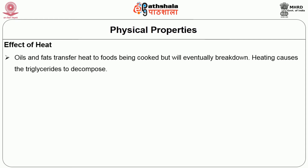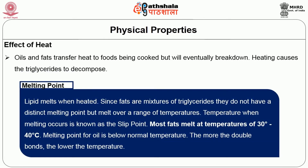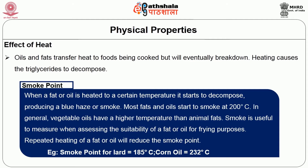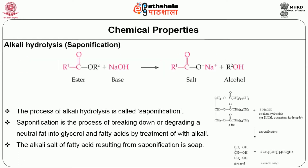Oils and fats transfer heat to foods being cooked but will eventually break down; heating causes triglycerides to decompose. Most fats melt at temperatures of 30 to 40 degrees C, and the melting point of oil is below normal temperature — the more double bonds, the lower the temperature required to melt the oil. The smoke point is the temperature at which a fat or oil starts to totally decompose, producing a blue haze or smoke. The smoke point for lard is 185°C and for corn oil is 232°C.